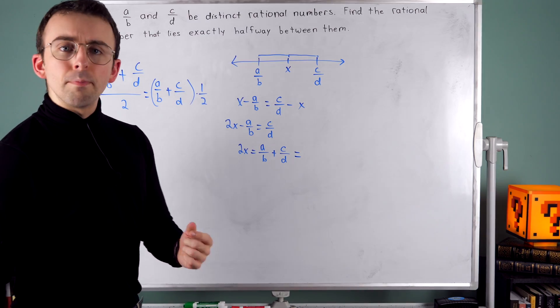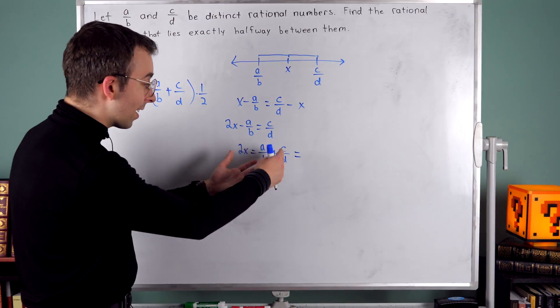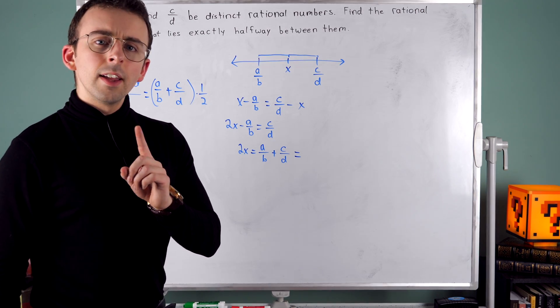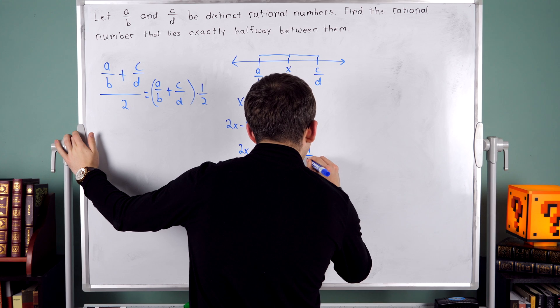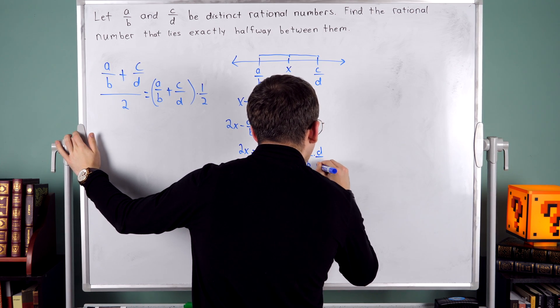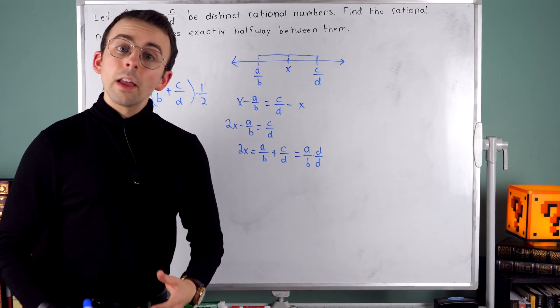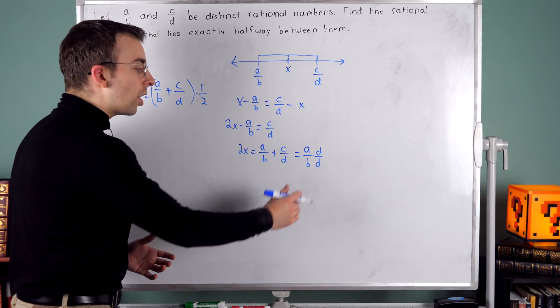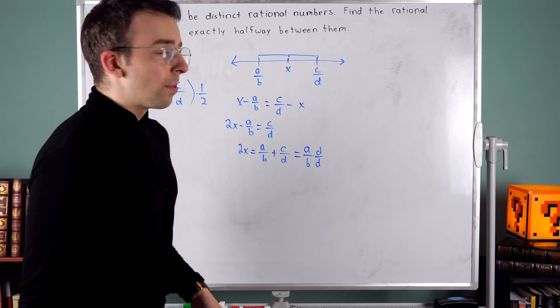I would like A over B to have a D in its denominator, just like C over D does. In order to do that, I'm going to multiply A over B by D over D. This way, I'll have a D in the denominator, but also I'm not changing the value because D over D is one. So I'm just multiplying by one.